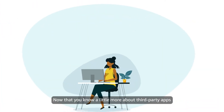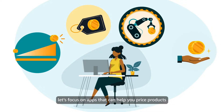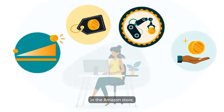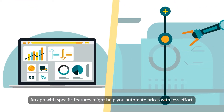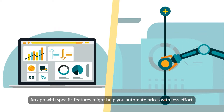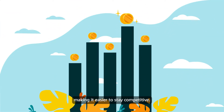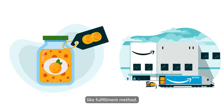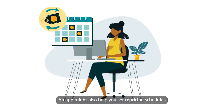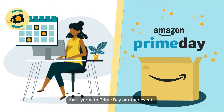Now that you know a little more about third-party apps and where to find them, let's focus on apps that can help you price products in the Amazon Store. Using an app to price your products can offer several advantages. An app with specific features might help you automate prices with less effort, making it easier to stay competitive. Or it could allow you to price items using new criteria like fulfillment method. An app might also help you set repricing schedules that sync with Prime Day or other events.